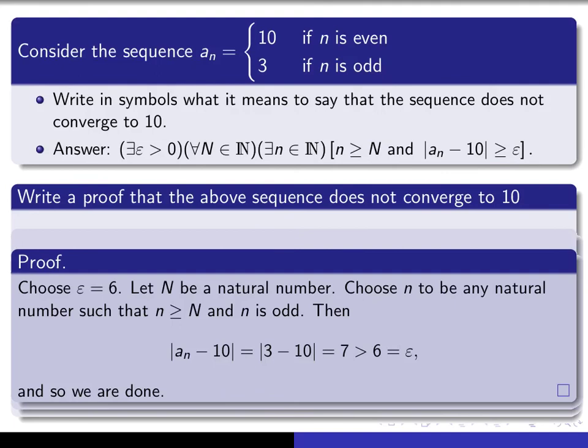Okay, so here you see my proof. The first sentence is choose epsilon to be 6. Okay, so I've chosen epsilon to be a positive real number and we'll see if it works. So now I come here and I say let capital N be a natural number and now I have to choose my little n and so I'm going to choose it to be any natural number such that n is bigger than or equal to the given capital N and n is odd. Now I just simply have to verify that this happens and I'll be done.